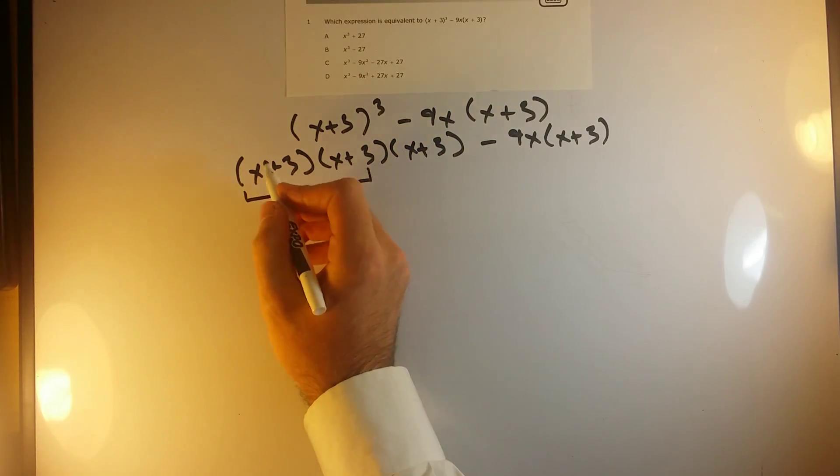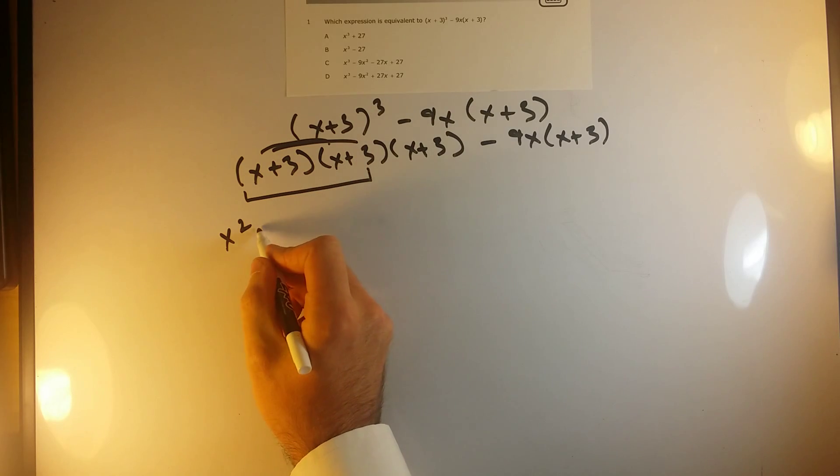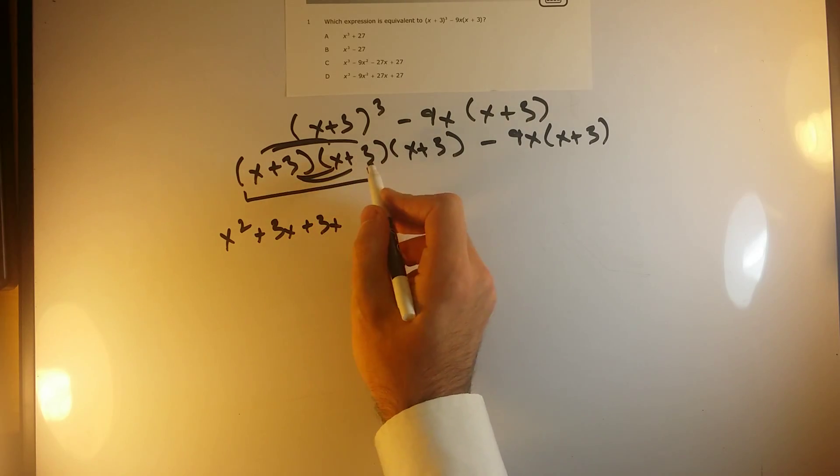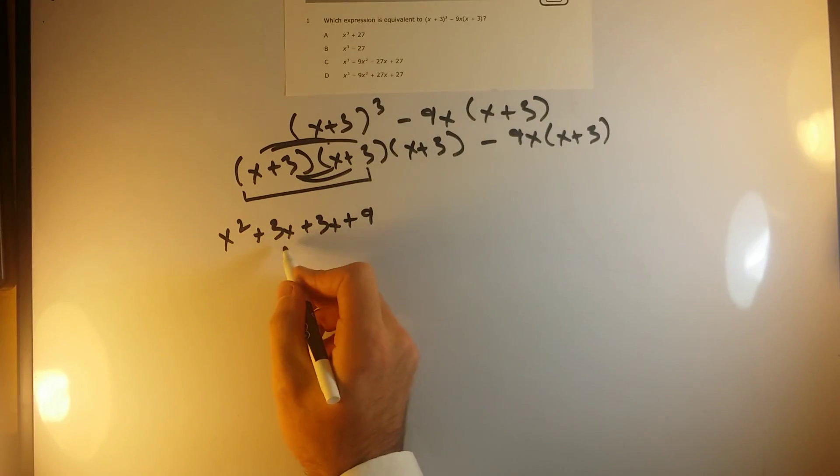Okay, so x plus 3 times x plus 3. Alright, if I distribute, x times x will give me x squared. x times 3 gives me 3x. 3 times x gives me 3x. 3 times 3 gives me 9. And if I combine my like terms, I get x squared plus 6x plus 9.